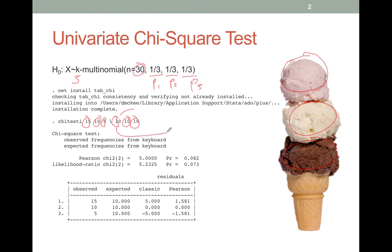In that case, each of these, well this one is p1 times the probability times n which is 30, and so that's where we get the tens. These are expected numbers and these are our observed numbers.